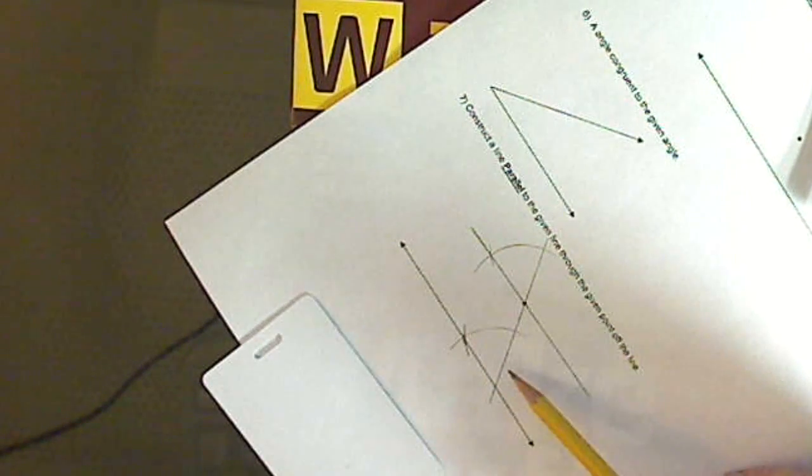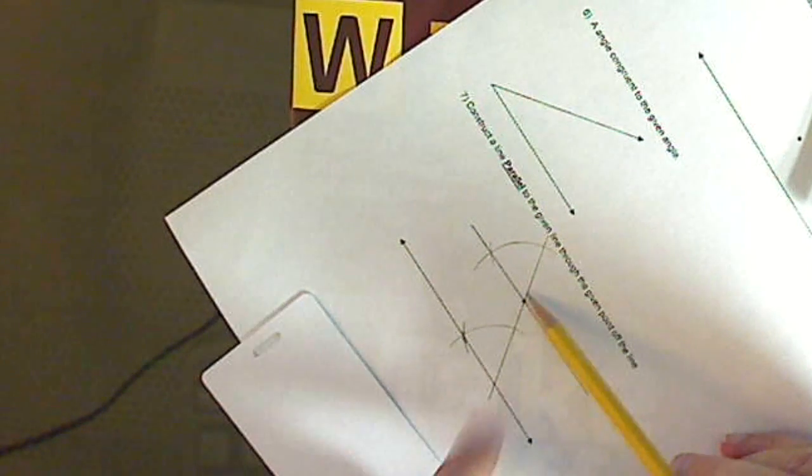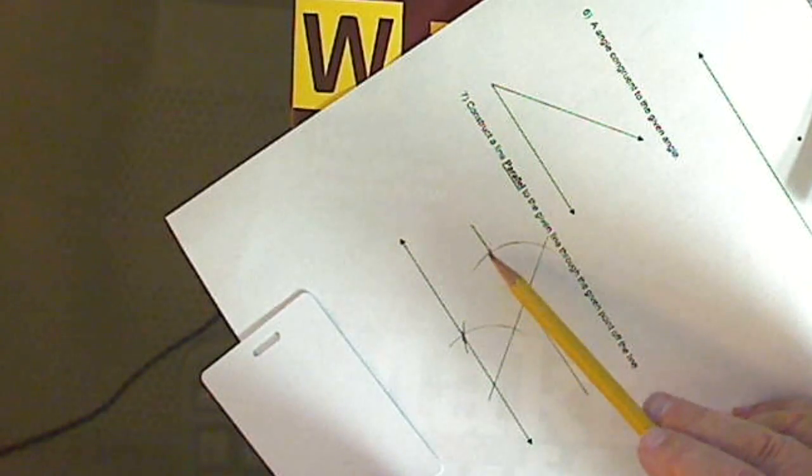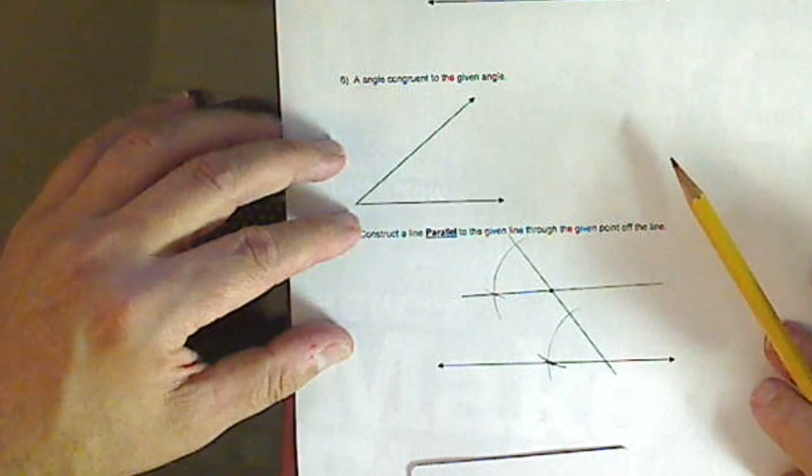So what am I looking for? Transversal. Arc. Arc. Equidistance from the point. Measure from top to bottom, top to bottom, connect the two points, and you've got a fairly parallel line, not too bad.